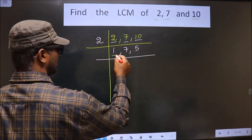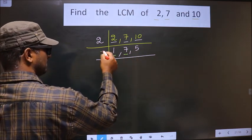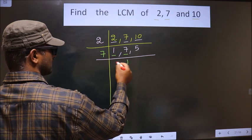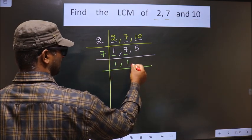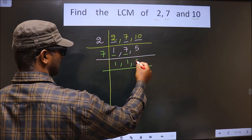Now here we got 1. So focus on the next number that is 7. 7 is a prime number. So we take 7 once, 7. 5 is not divisible by 7. So you write down 5 as it is.